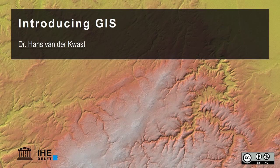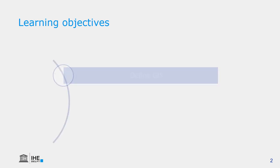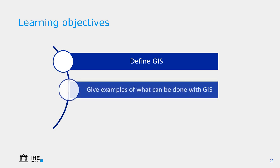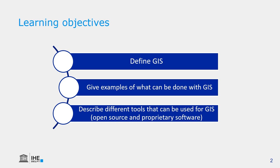Hello, my name is Hans van der Kvast. I'm a lecturer at IHC Delft Institute for Water Education. In this video I'm going to teach you what GIS is. The learning objectives of this lecture are to define GIS, to give examples of what can be done with GIS, and describe different tools that can be used for GIS, both open source and proprietary software.